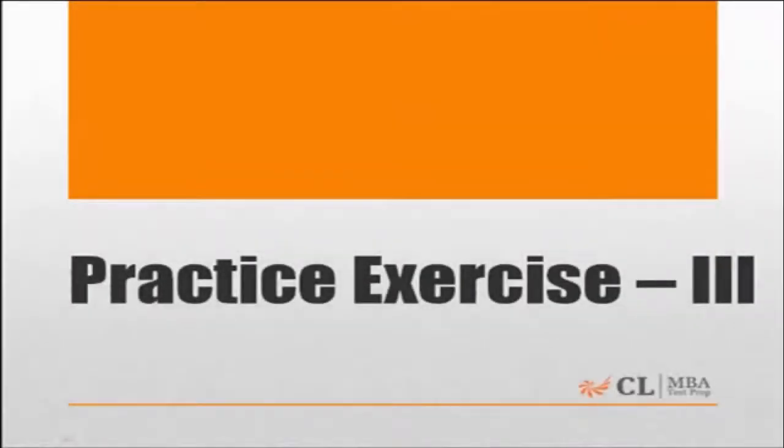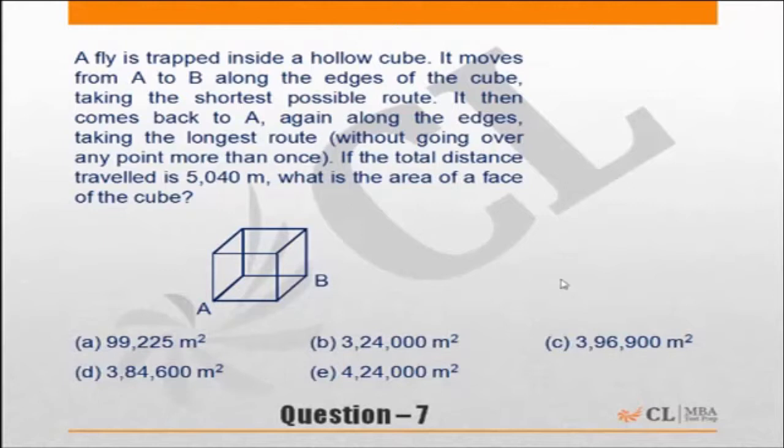Practice exercise 3: A fly is trapped inside a hollow cube. It moves from A to B along the edges of the cube, taking the shortest possible route. The shortest possible route from A to B could be this route along the edges, or it could be this route, but both are the same in length.